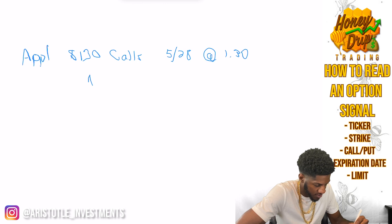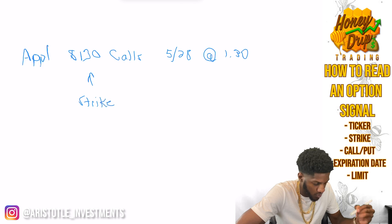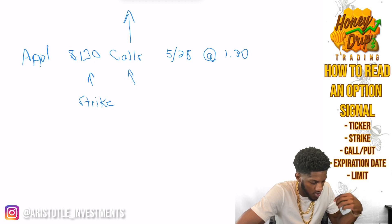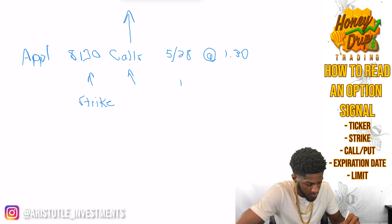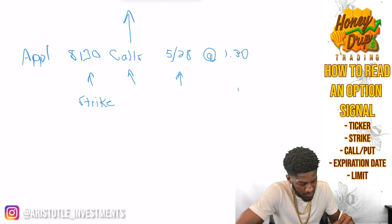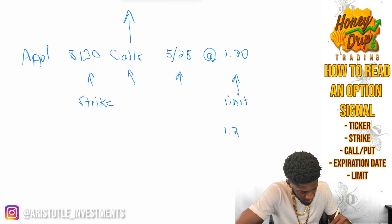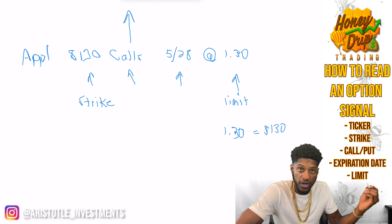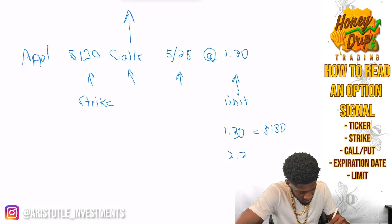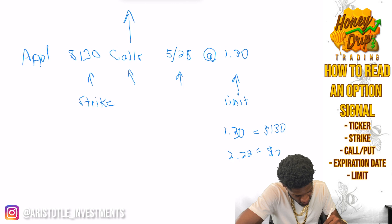This right here is called the strike. This is betting on a stock to go up. Call: bet on the stock to go up. This is my expiration date, and this is my limit price. To make things simple, the limit is always times 100. So this will equal $130. If it was 2.22, it would be $222.